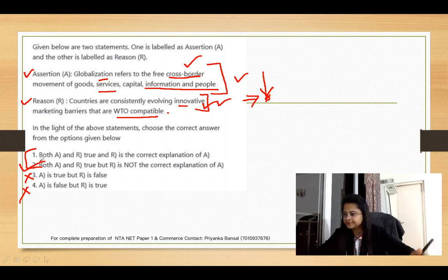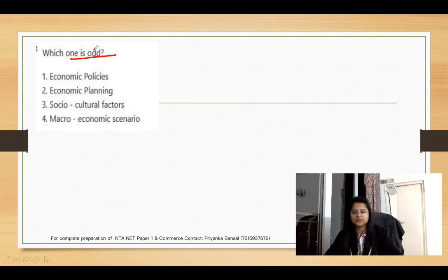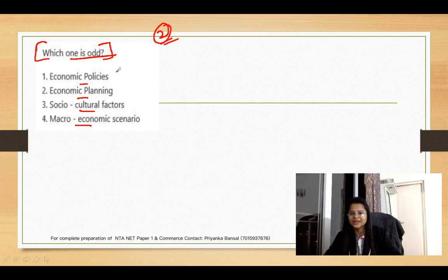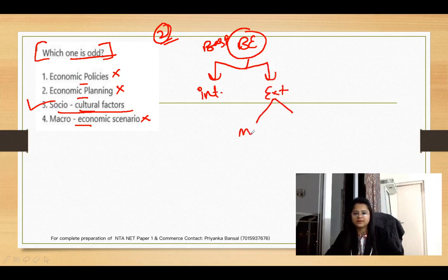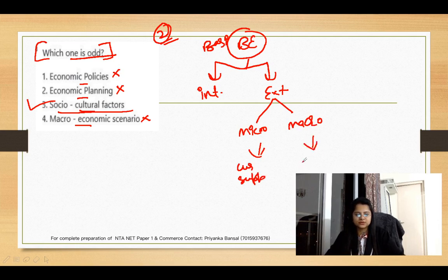The next question asks which one is the odd one out: economic policies, economic planning, macroeconomic scenario, and social culture factors. This was an easy question. Economic policies, economic planning, and macroeconomic scenario are all part of the economic environment, whereas social culture factors belong to a different macro environment category. From business environment, we know internal environment and external environment - external is divided into micro and macro. In micro: customers, suppliers. In macro: economic environment, legal, political, demographic, social culture. So social culture is the odd one out here.